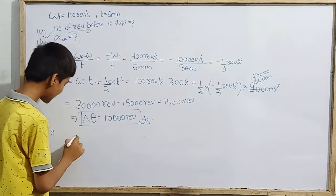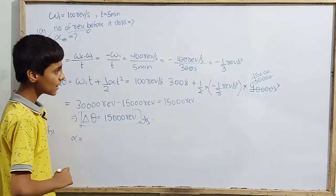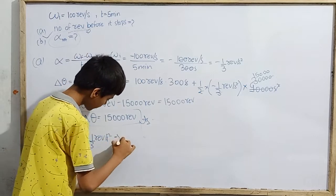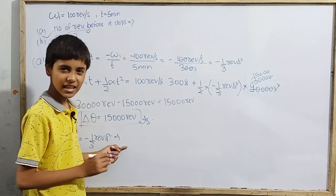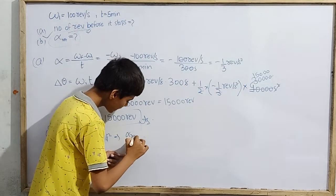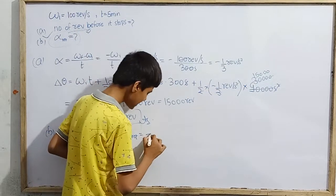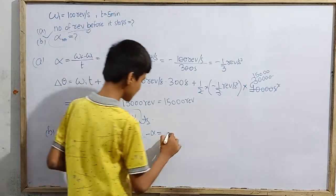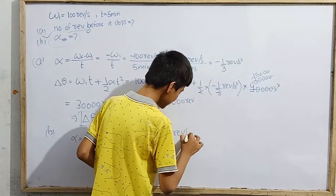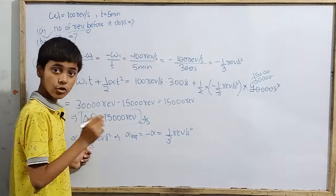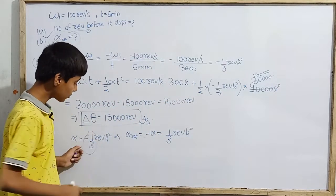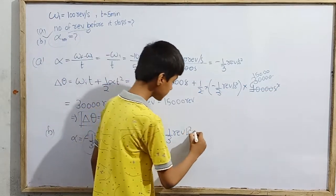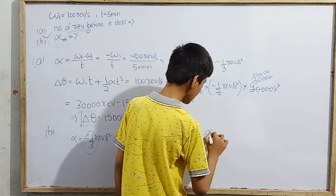I have the angular acceleration given as −1/3 revolution per second squared. Angular retardation is the magnitude of negative angular acceleration, which is the negative of −1/3. So retardation = 1/3 revolution per second squared — a positive quantity.